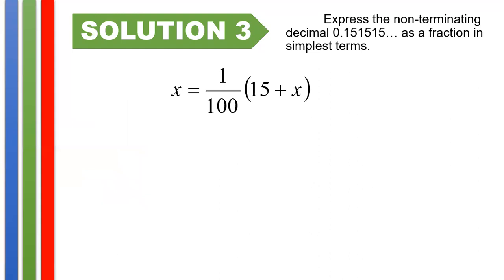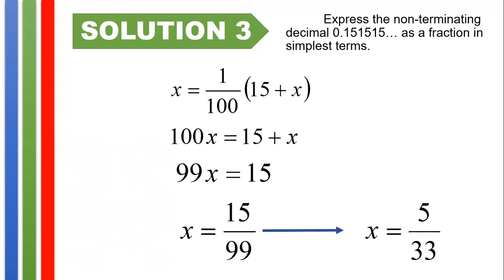Multiplying both sides by 100 gives 100x equals 15 + x, because any expression multiplied by 1 is itself. We could see that we could subtract both sides by x, which gives 99x equals 15. And dividing both sides by 99, we have 15/99, which simplifies to 5/33. So you see, I have given you three solutions for this problem, yet they give us the same answer.